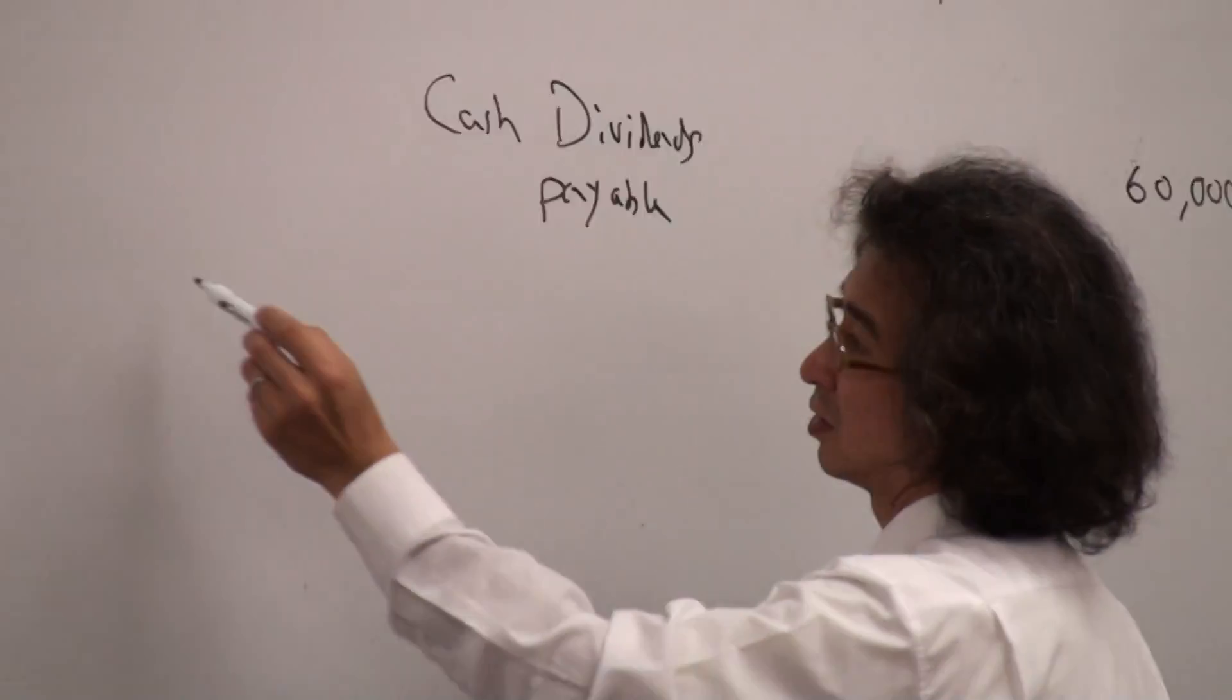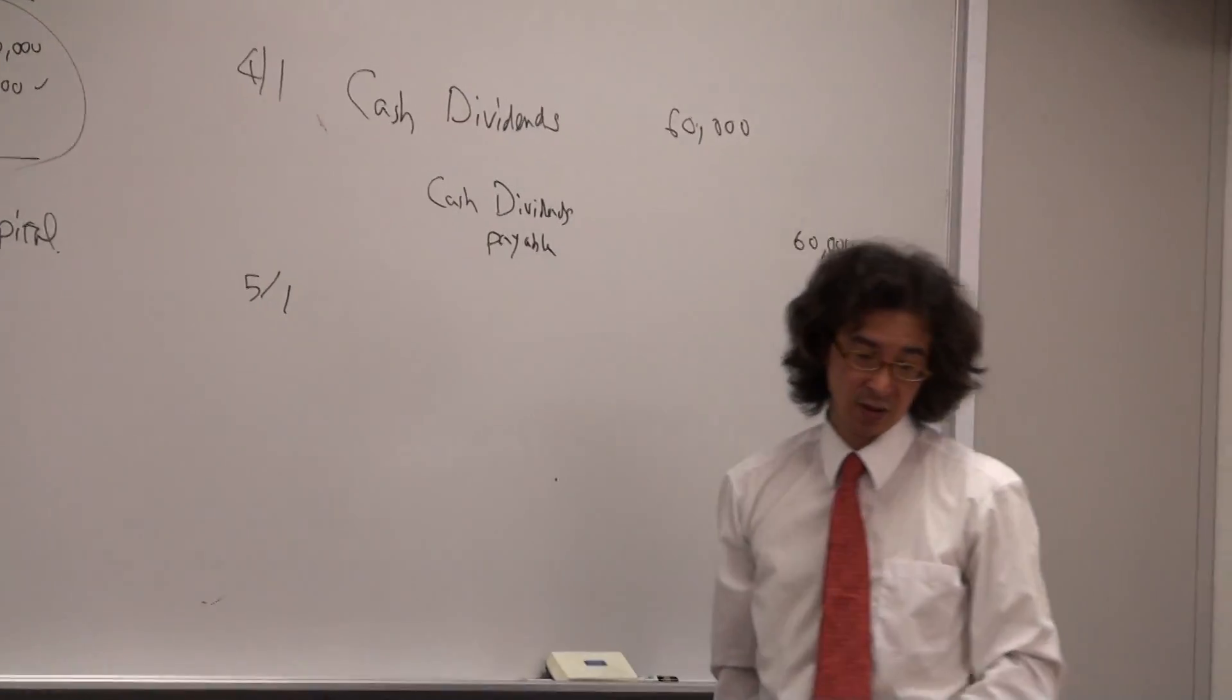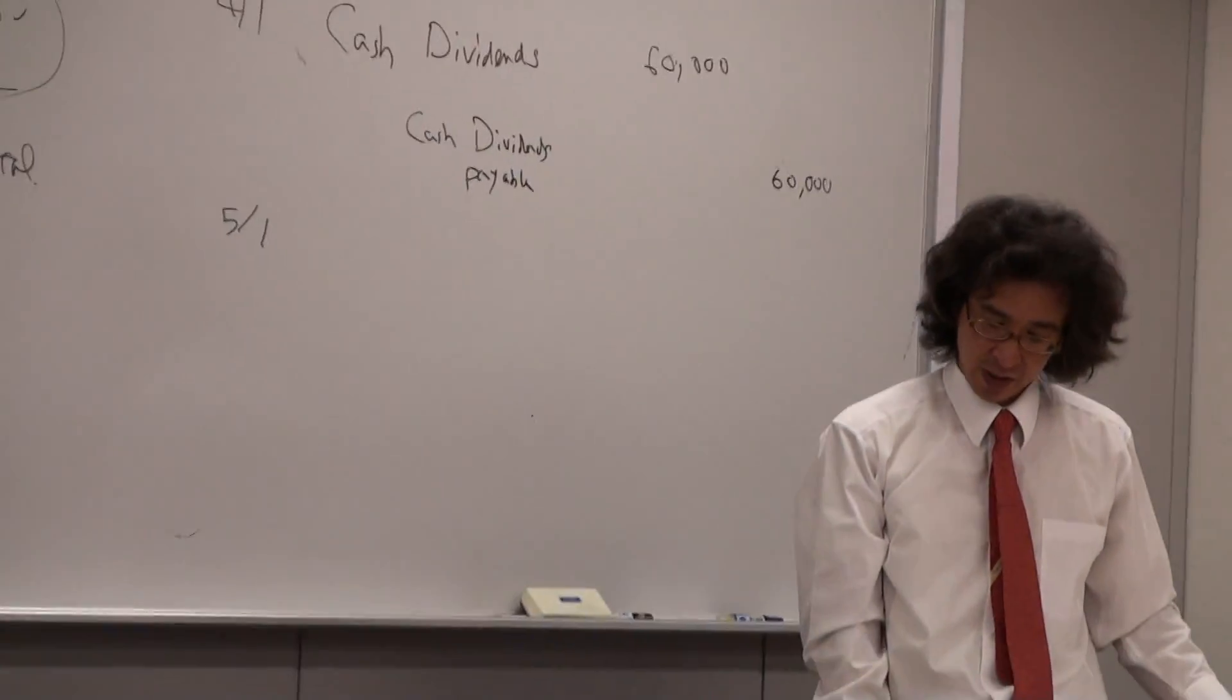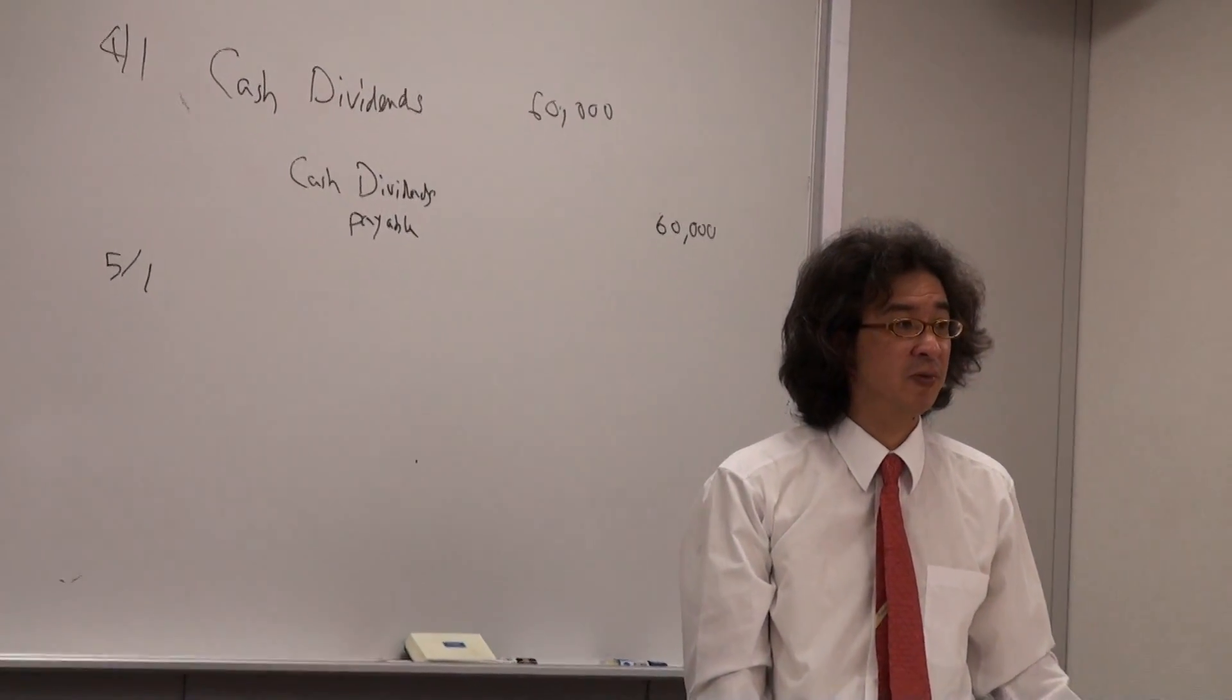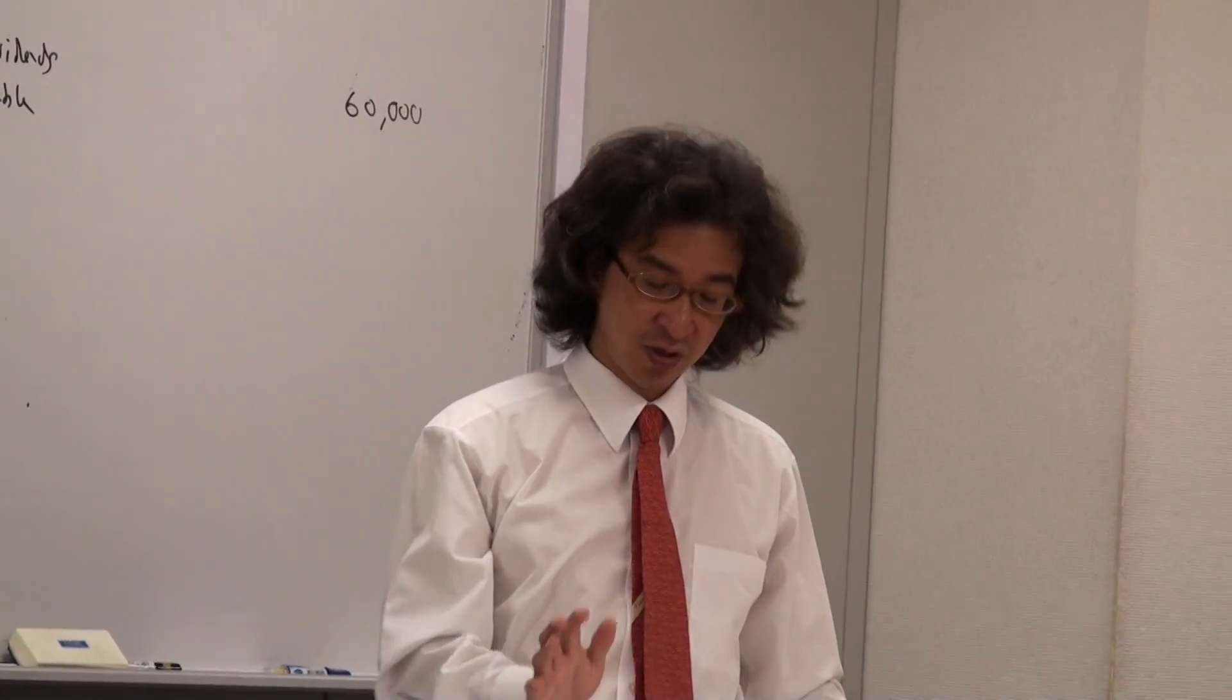For May 1st, the list of shareholders will be able to get paid, right? What will be the entry on May 1st? What's the entry? What happened on May 1st for the company? What did the company do on May 1st? All the shareholders on the list are the ones that are going to get paid. So just checking the list, right? Who's able to pay? Yeah, that's exactly it.